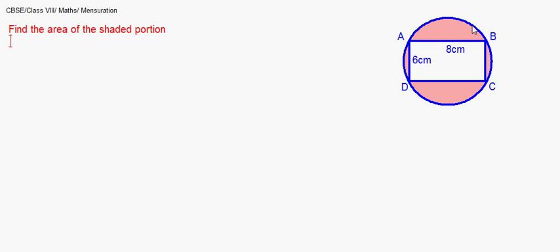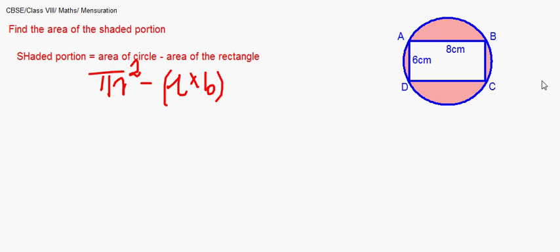Find the area of the shaded portion in the figure. We don't have a direct formula to find the area of the shaded portion so we'll find it as area of the circle minus area of the rectangle. Now what is the area of the circle? It is pi r square.